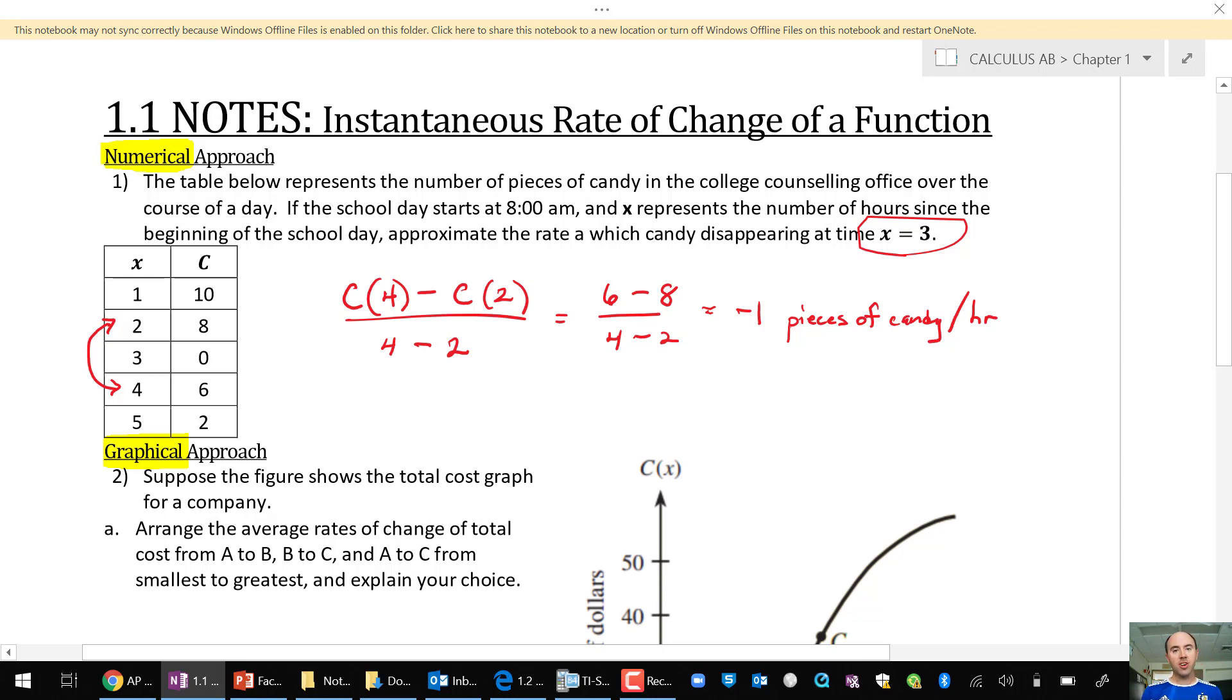If I were to write a sentence that would interpret this, I would say at 11 a.m., since the day starts at 8 a.m., three hours later would be 11, candy is disappearing at the rate of negative 1 pieces of candy per hour. That's a numerical approach of an average rate of change.